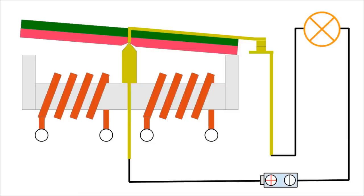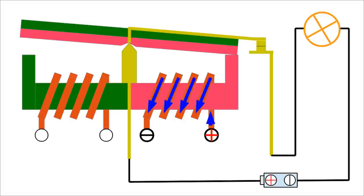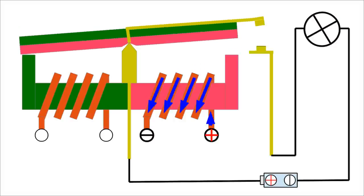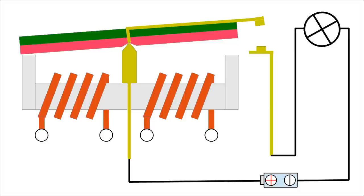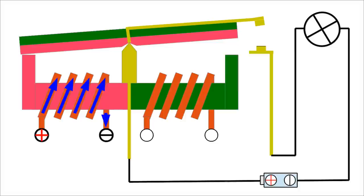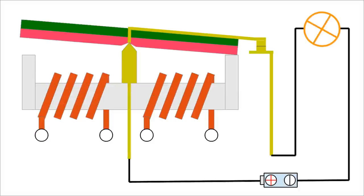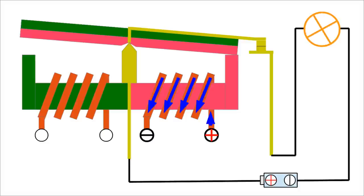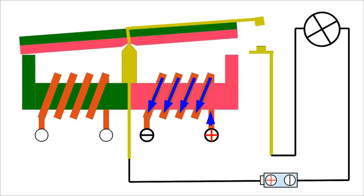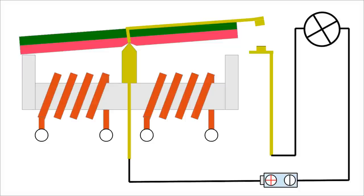Another construction principle of a bistable relay is based on a permanent magnet operating as armature. At the animation, the permanent magnet is like a seesaw at the top of the U-shaped soft iron core. The permanent magnet rests either with its left or right end sticking at the core material. The armature tilts whenever the direction of the magnetic field caused by one of the coils creates a magnetic north pole at that end of the core material the permanent magnet is currently sticking on. You can either alter the polarity at a single coil or insert two separate coils, both wired to a DC voltage with different polarity.